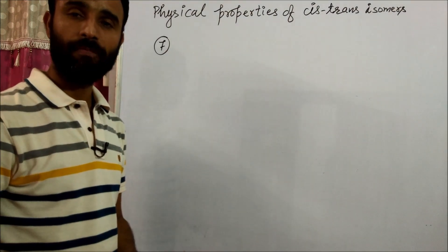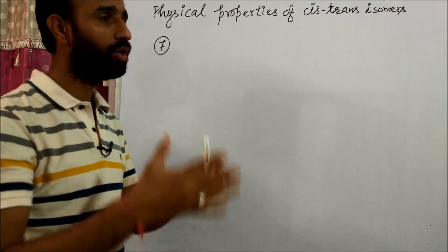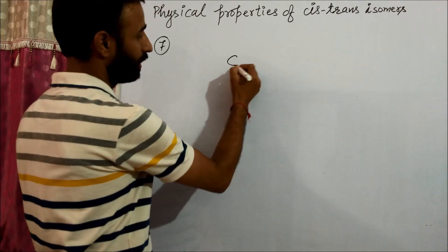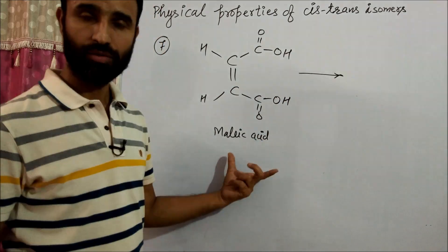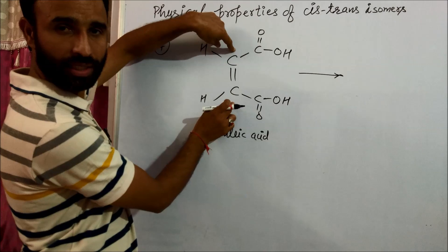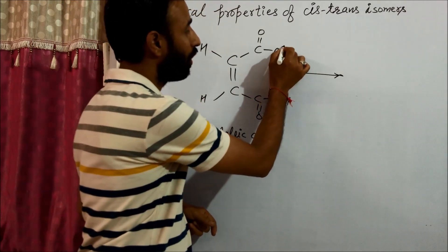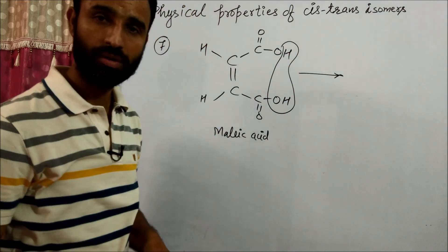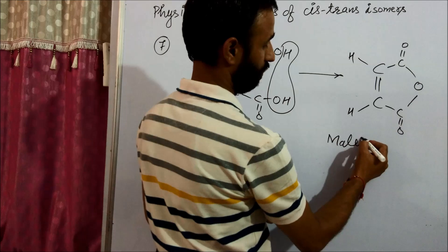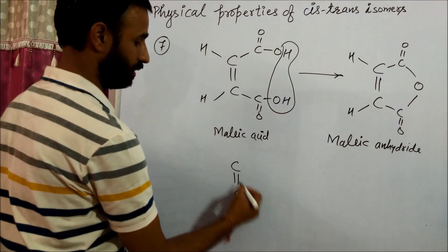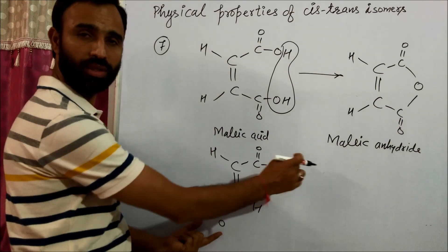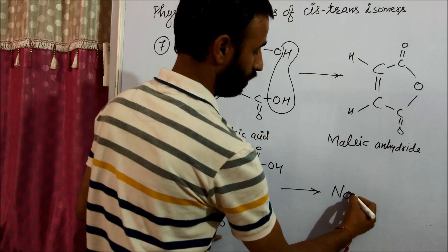The last point is intramolecular reactions. Intramolecular reactions take place when two groups are close to each other. Let us take maleic acid. When we heat it, both the COOH groups are on the same side of the double bond — maleic acid is a cis alkene. So H and OH are removed because these groups can form a hydrogen bond, and we get maleic anhydride. In the trans isomer (fumaric acid), the COOH groups are on opposite sides of the double bond, so there is no reaction.